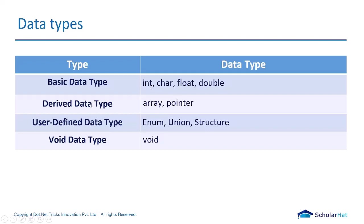In derived data types, arrays and pointers are covered, and we're going to learn those in further videos. In user-defined data types, enum, union, and structure are included. We're going to see what these mean, how the syntaxes are defined, and everything. Last is the void data type, which we'll also cover.